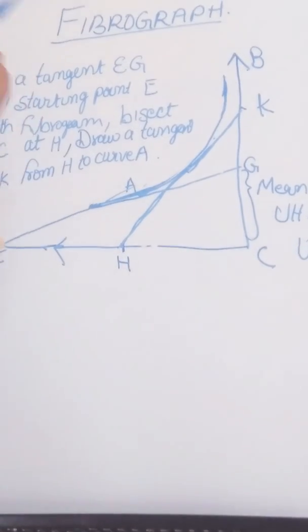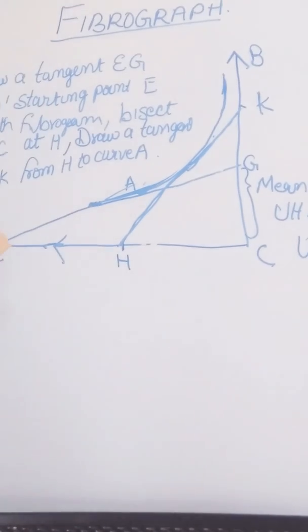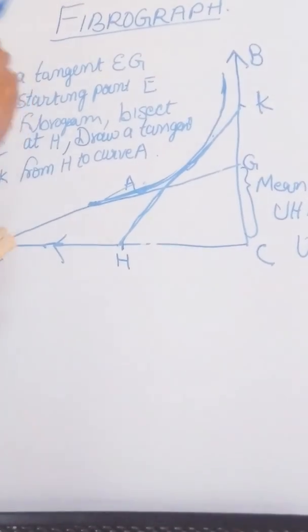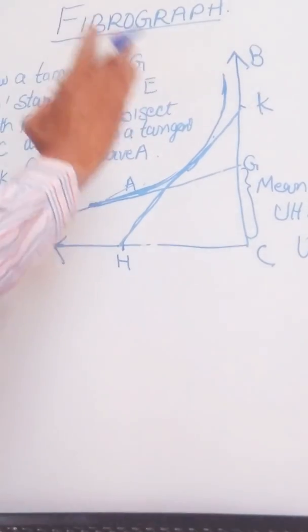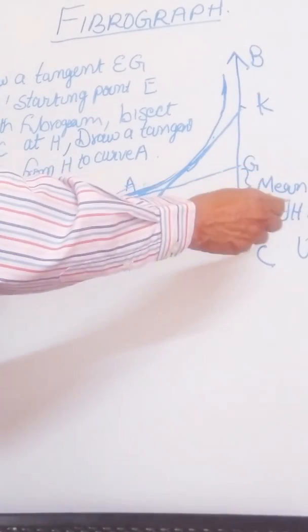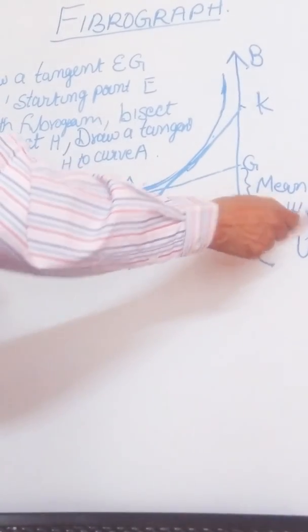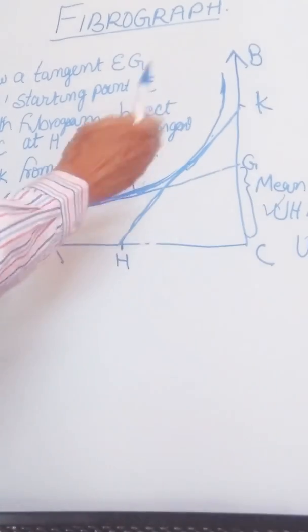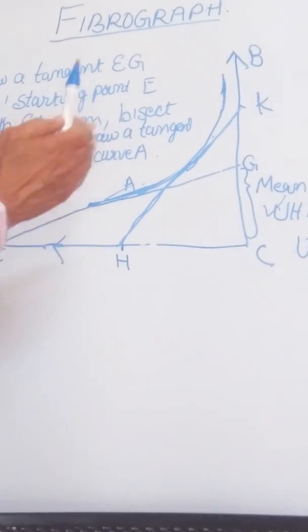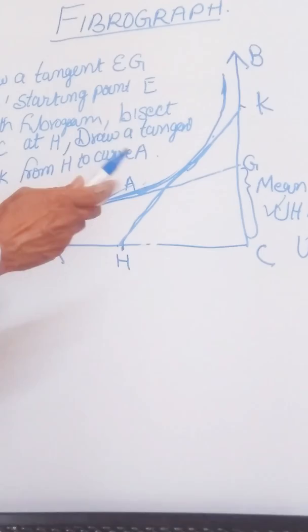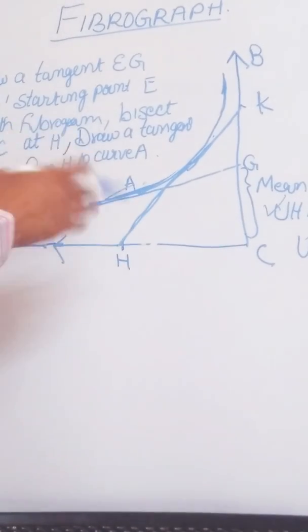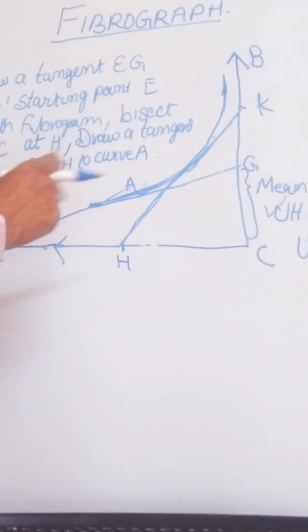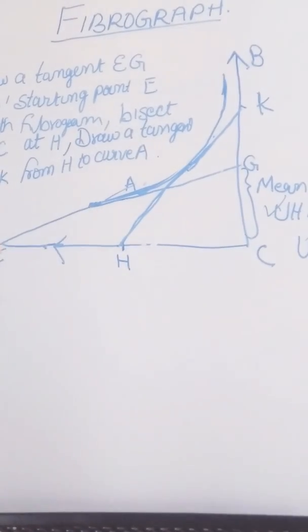The upper half mean length is a value approximating the staple length as determined by the cotton classer. The correlation between the upper half mean length and the classer's length is excellent. The difference between the two values usually being within 1/32 of an inch.